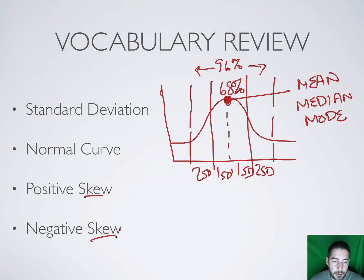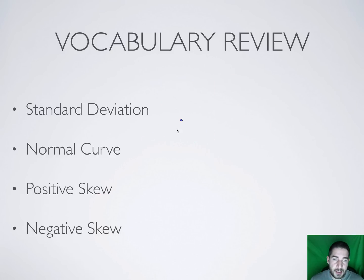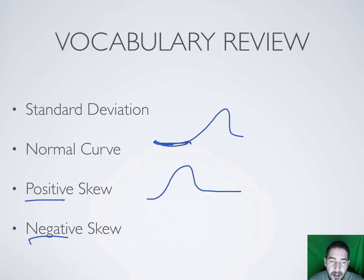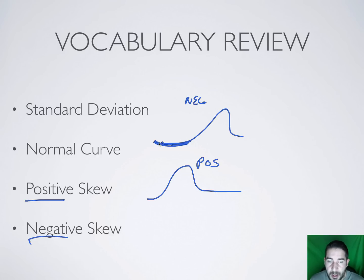If the mean, median, and mode are not all in the same spot, we have what's called a skew. A skewed distribution has a long tail going either left or right. The way you tell whether it's a positive or negative skew is to look at which way the tail is pointing — the tail tells. If the tail points left into negative territory, it's a negative skew; if the tail points right into positive territory, it's a positive skew. Don't be confused by which side the hump is on — focus on the tail.